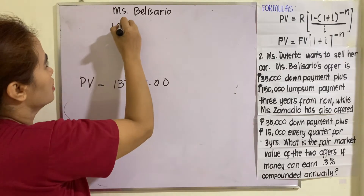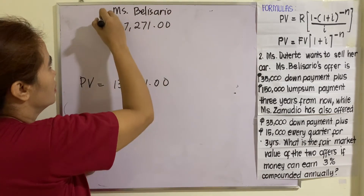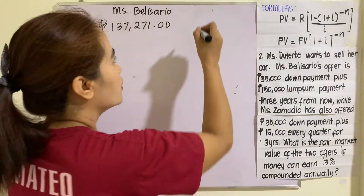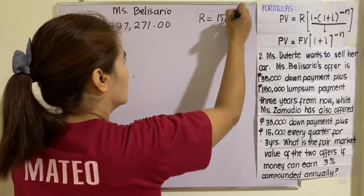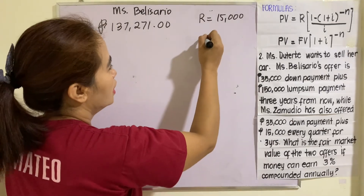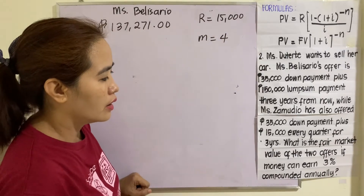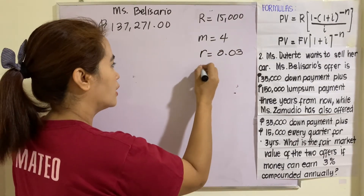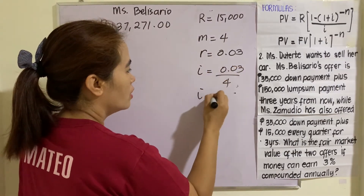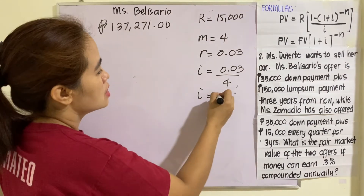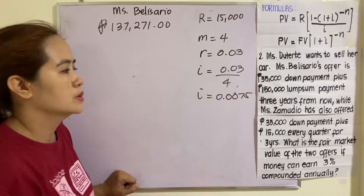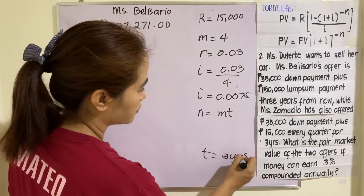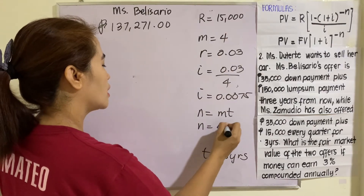Now for Miss Zamudio's offer: R equals 15,000, and payments are every quarter, so m equals 4. The annual interest rate r is 0.03, so i equals 0.03 divided by 4, giving i equals 0.0075. T is still three years, so n equals m times t, which is 4 times 3, giving n equals 12.